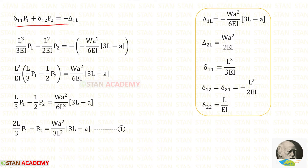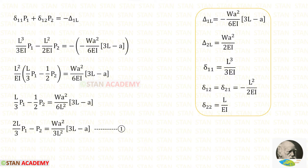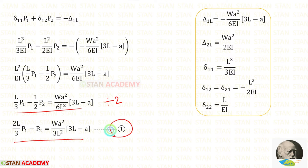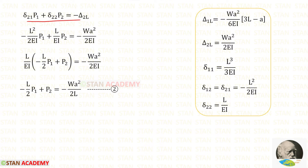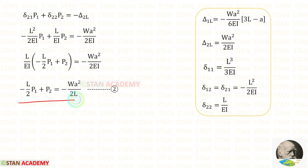Now let us apply the values of Delta 1L, Delta 11, and Delta 12 in the first equation. Negative times negative gives positive. From both terms we can take L²/(EI) outside, cancel EI, and bring L² to the other side as a denominator. Dividing the equation by 2 gives us Equation 1. Then applying the values of Delta 2L, Delta 21, and Delta 22 in the second equation, taking L/(EI) outside and cancelling, gives us Equation 2.